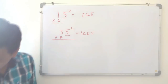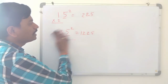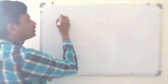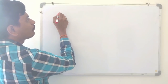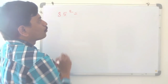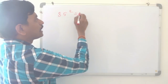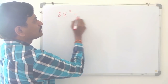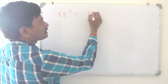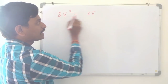Let us take a bigger number: 85 squared. It ends with 5, so the square ends with 25. The digit before 5 is 8; the next number is 9. Eight times 9 is 72, so 85 squared is 7225.